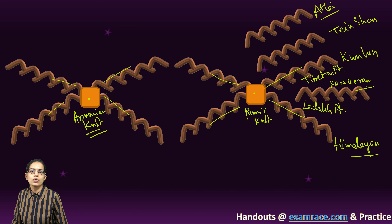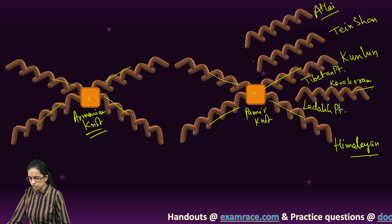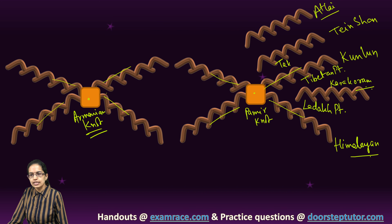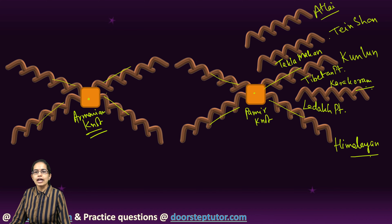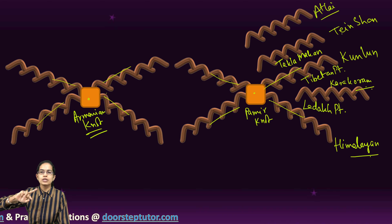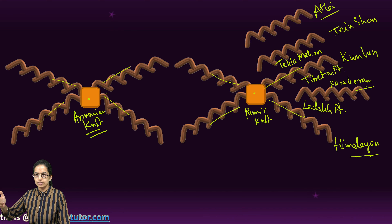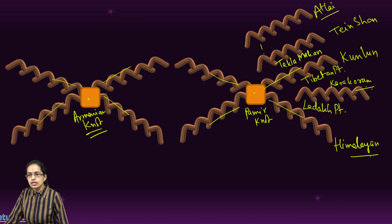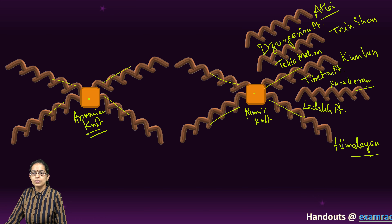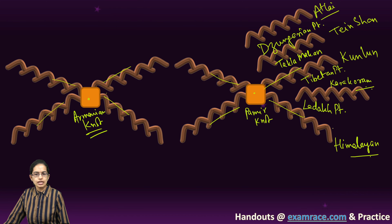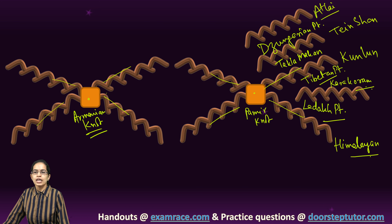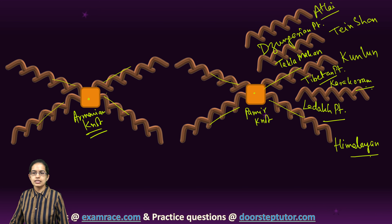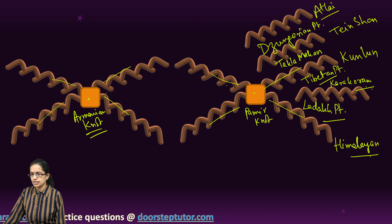Between the Kunlun and the Tian Shan region you have the Taklamakan desert area. North of Tian Shan, between the Tian Shan and the Altai ranges, you have the Dzungarian plateau. So three important features: the Ladakh plateau, the Tibetan plateau, then north of it the Taklamakan desert in China, and then the Dzungarian plateau.